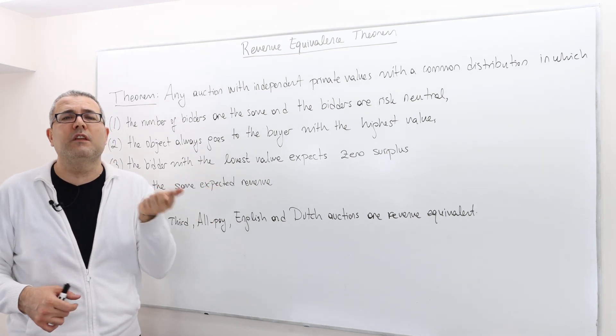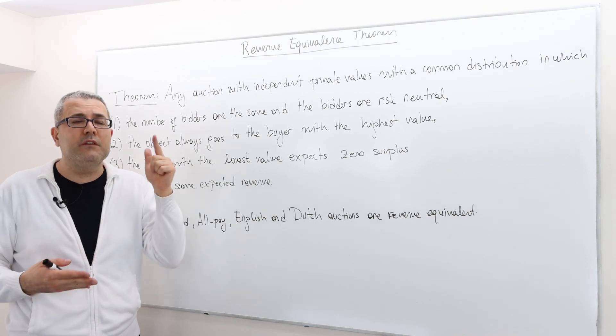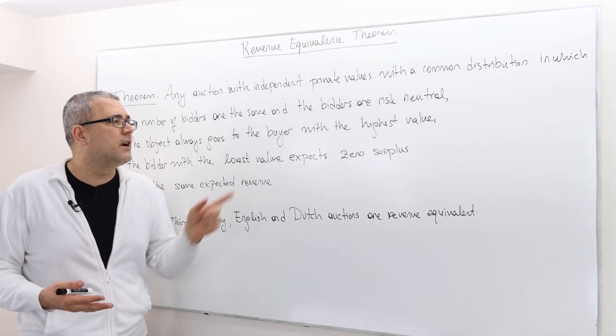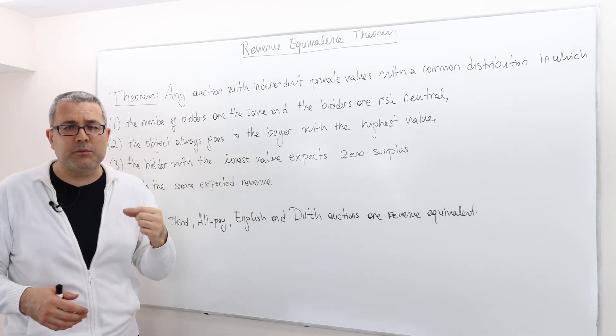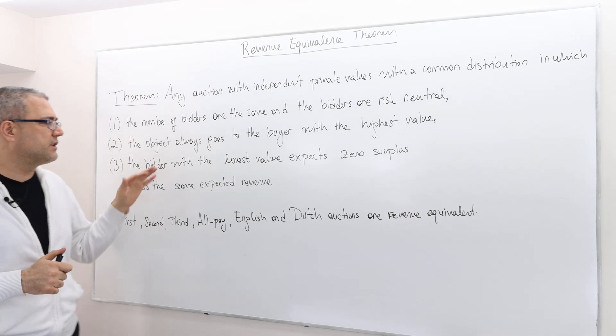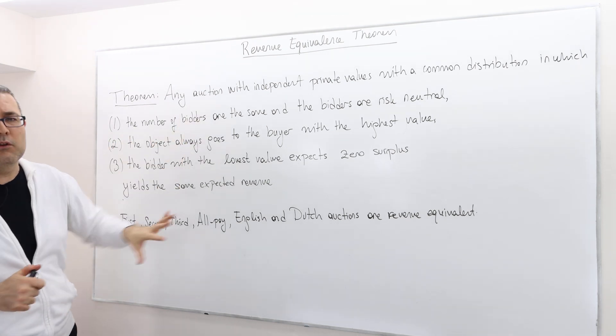If this is the case, for example, even though you lose the auction, even though you bid zero, you make no payment whatsoever, you may actually still end up negative surplus. So those auction situations are not going to be part of this theorem.